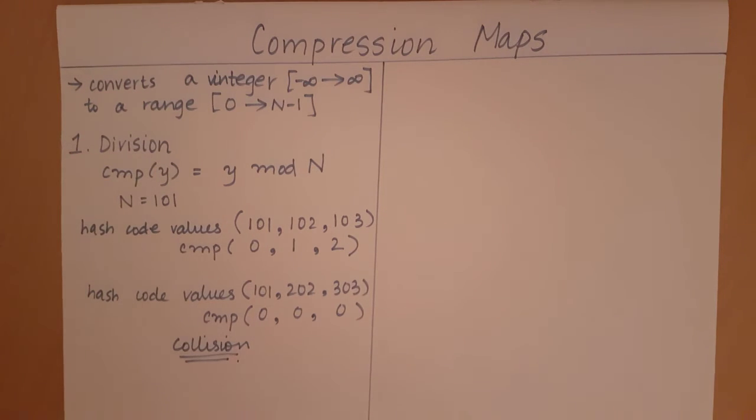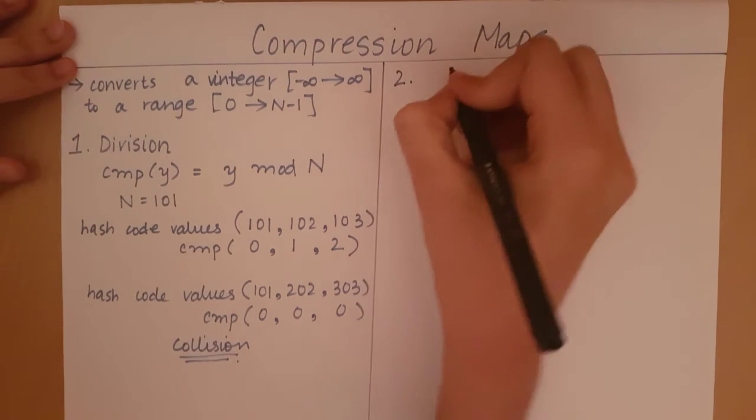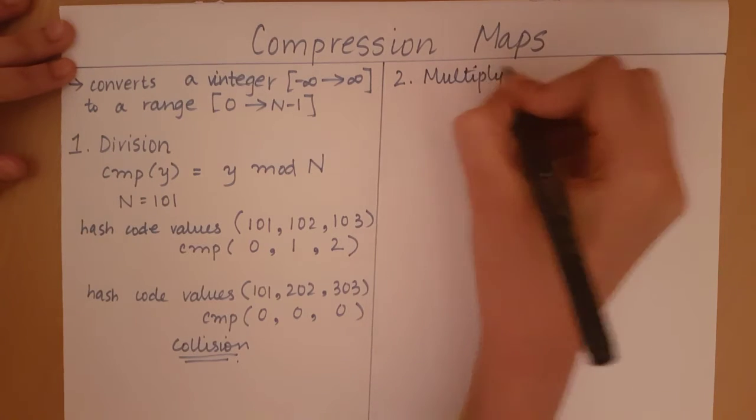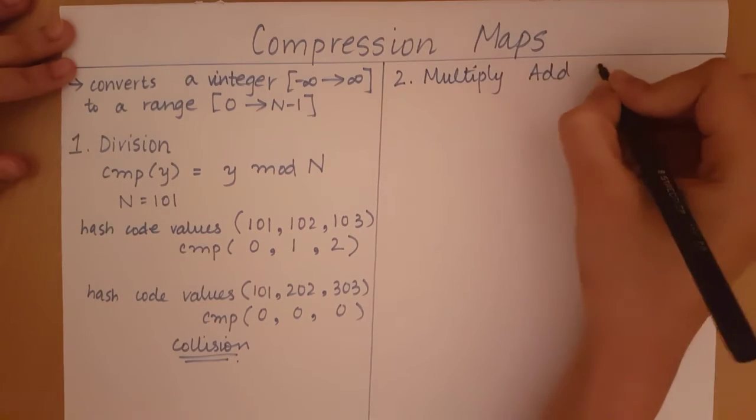So to avoid this much collision, we opt for a different method. This method is called multiply, add and divide.